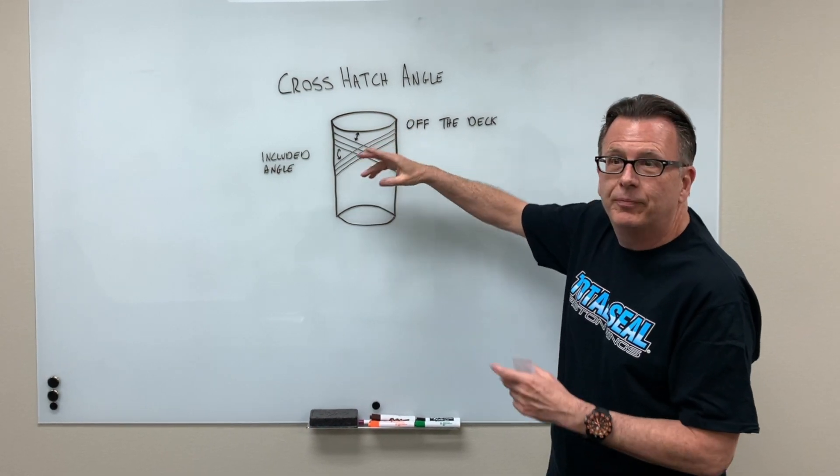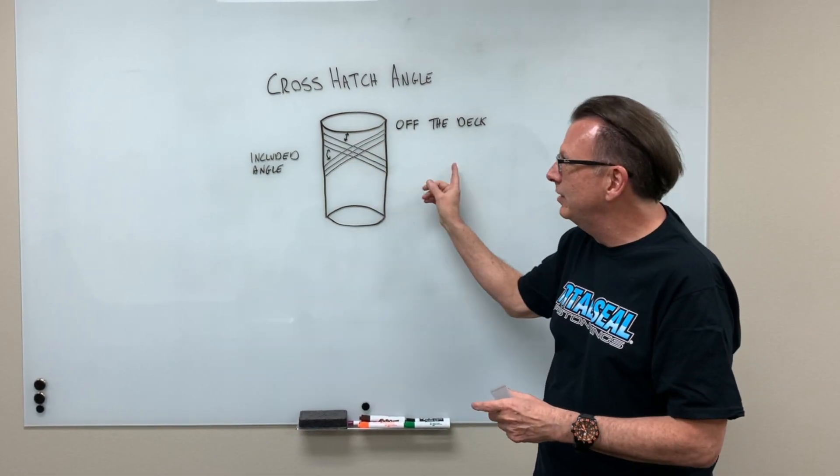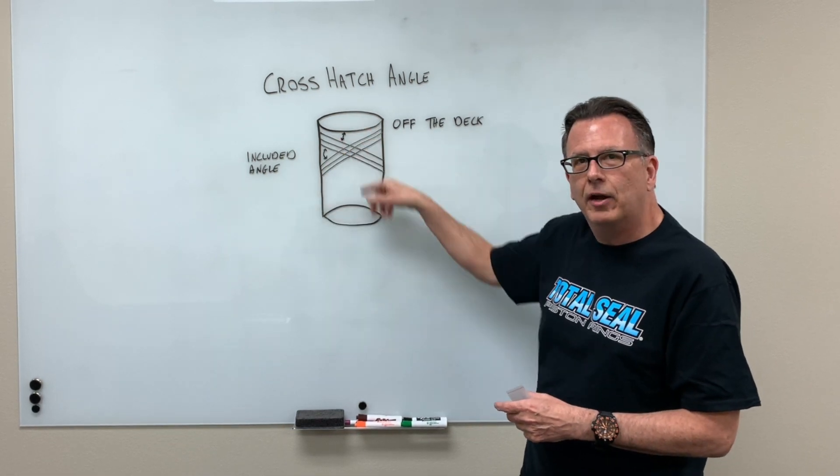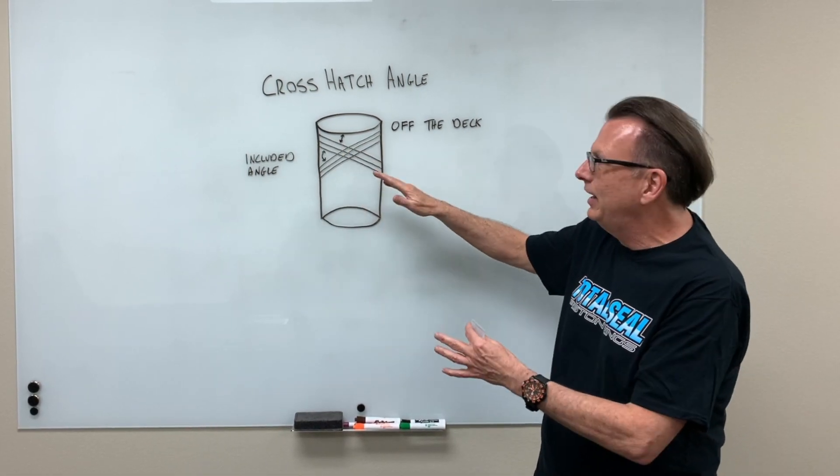Flatter the crosshatch is, it reduces blow-by, but at the same time as we flatten, oil wants to go left to right, side to side, not up and down. So very important that we get the right angles.